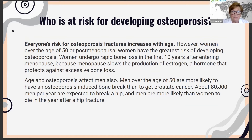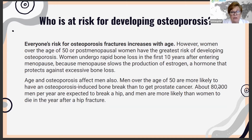Everyone is at risk for developing osteoporosis, but it does increase with age. Women undergo rapid bone loss in the first 10 years after entering menopause because estrogen helps preserve the bone. After the age of 25, everybody starts losing small amounts of bone, but it accelerates in women after age 50. It does affect men, and they are likely to get osteoporosis more commonly than even prostate cancer. 80,000 men per year are expected to break a hip, and unfortunately men are more likely to die within a year of a hip fracture.